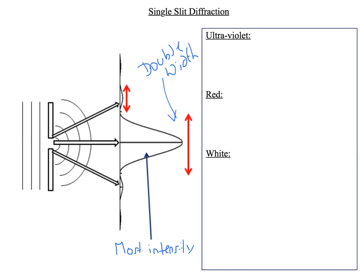The other key thing to know is what happens as you change to the different colors of light. So ultraviolet has a short wavelength, which means it has a smaller angle of diffraction.